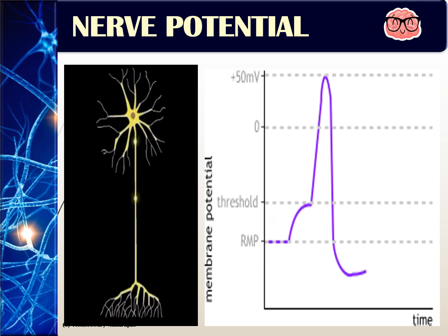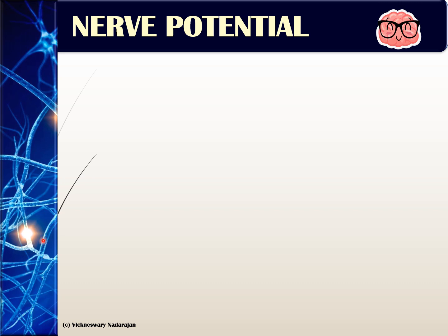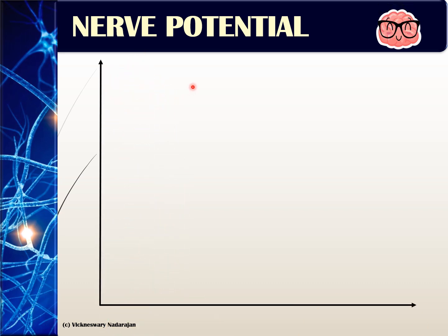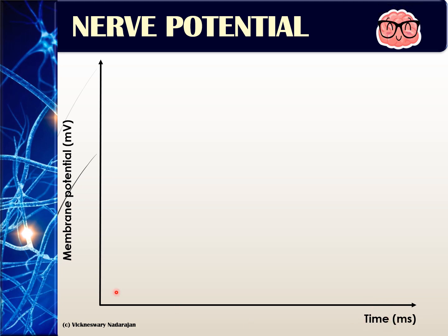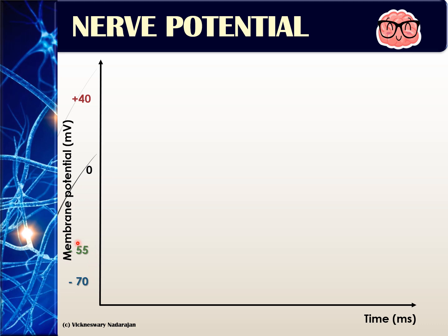Let's go into detail about the pattern of nerve potential. The y-axis is membrane potential in millivolts, and the x-axis is time in milliseconds. There are three values of membrane potential to remember: negative 70 millivolts, negative 55 millivolts, and positive 40 millivolts. Note these are not fixed values — in questions, negative 70 may appear as negative 80, negative 55 as negative 45, and positive 40 as positive 50, so the values are approximately in this range.